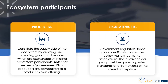Then you have regulators, government bodies, and other agencies — for example, government regulators, trade unions, certification agencies, policy makers, and consumer associations. These stakeholder groups set the governing rules, standards, and frameworks of the overall ecosystem. They are not necessarily just regulators, but groups that define standards, guidelines, recommendations, and the structure and values within a particular ecosystem — setting the overall framework and culture.